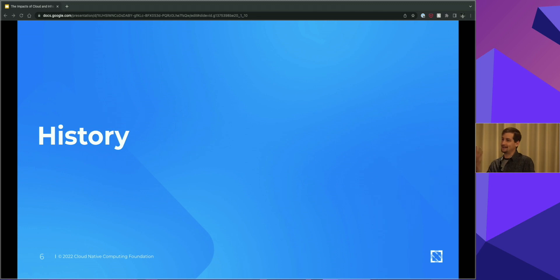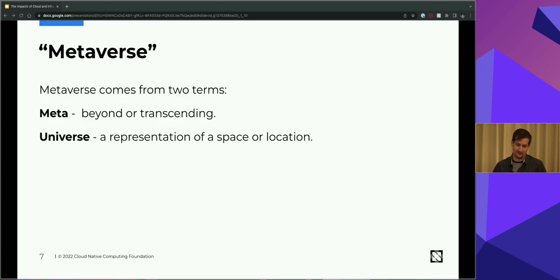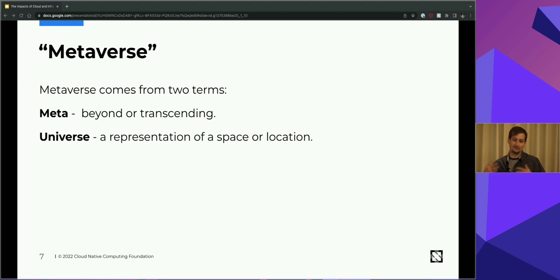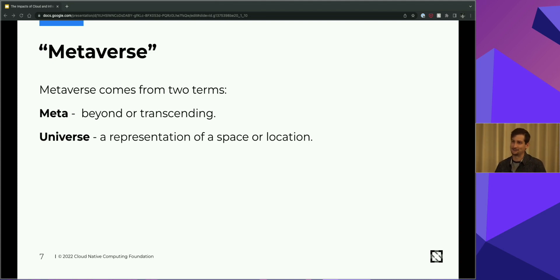Diving into the history: where did the metaverse come about, why is it called that? The word metaverse didn't begin as just one word — it actually started as two: meta and universe. Meta meaning beyond or transcending. So metaverse is essentially 'the place beyond' if you take the literal translation.